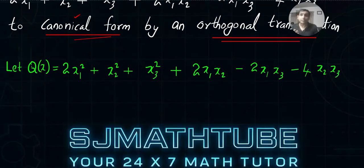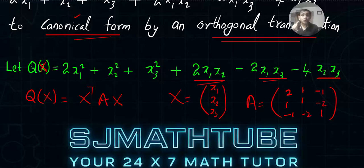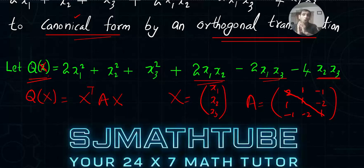Let the quadratic form Q(X) = x^T A x, where X = [x1, x2, x3]^T. The matrix A of the quadratic form is: diagonal entries 2, 1, 1 (coefficients of x1², x2², x3²), and off-diagonal entries a12 = a21, a13 = a31, a23 = a32. Notice this is a symmetric matrix — the matrix corresponding to a quadratic form is always symmetric.